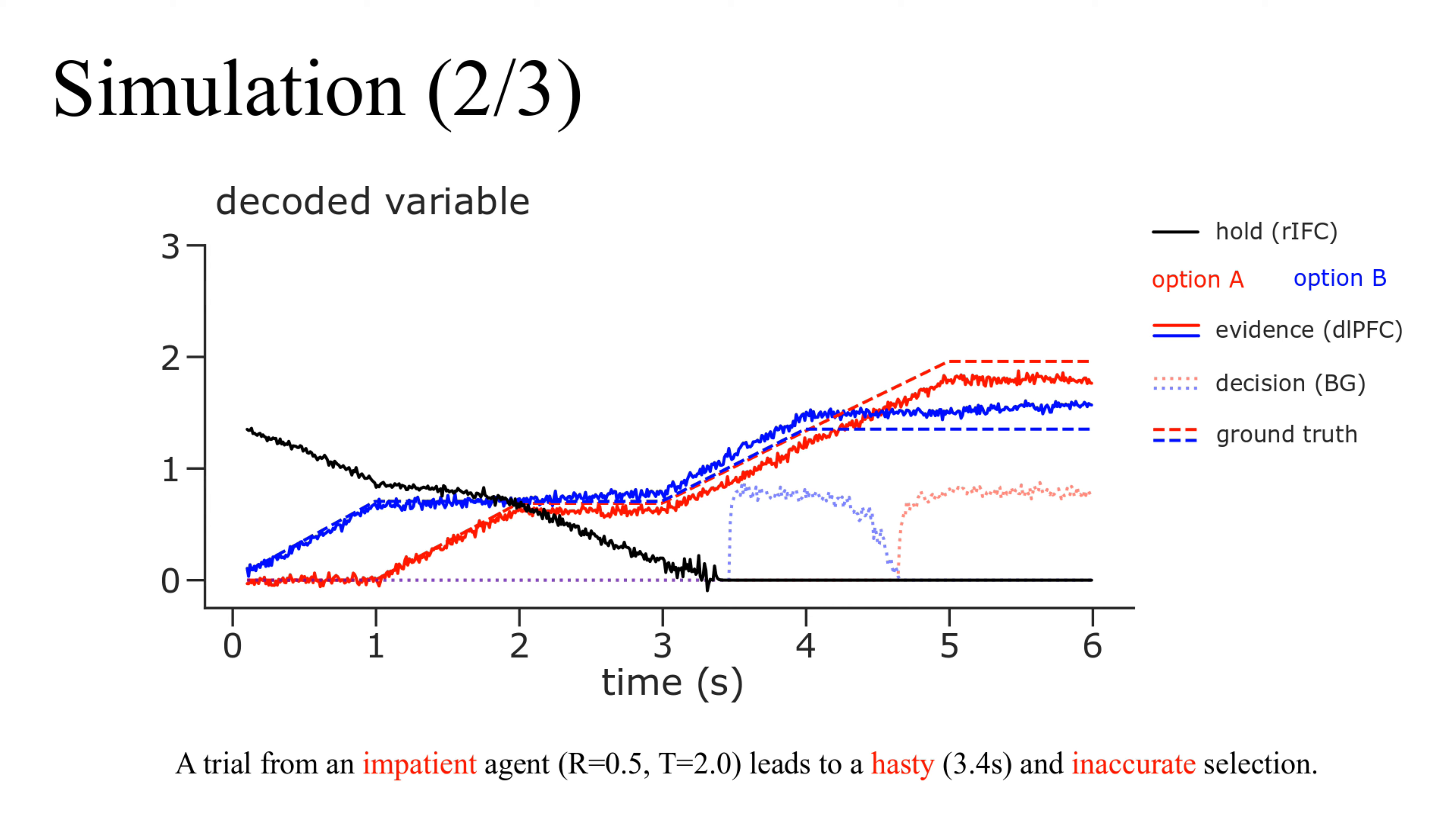In this trial, we created an impatient agent with low threshold and high urgency. Despite ambiguous evidence, the agent's decision threshold is crossed after 3.4 seconds when it chooses option B. However, the remaining evidence favors option A, making this choice ultimately incorrect.